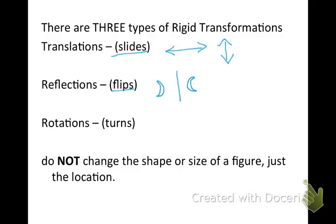The last rigid transformation is called a rotation, and you may have heard it called a turn. And that's where you take a figure and you rotate it, usually counterclockwise.